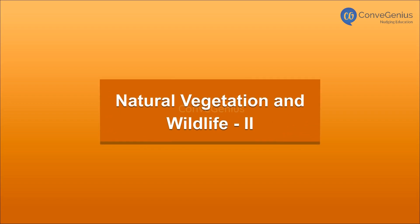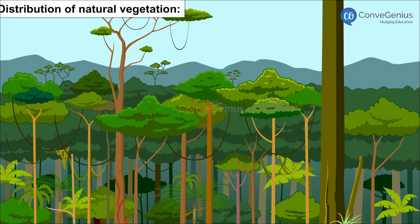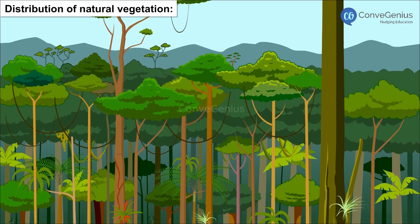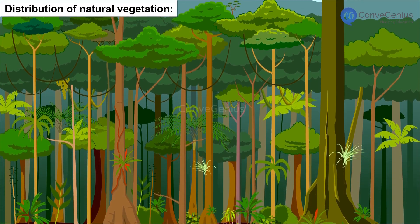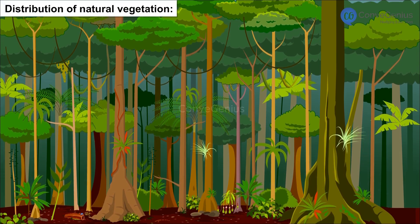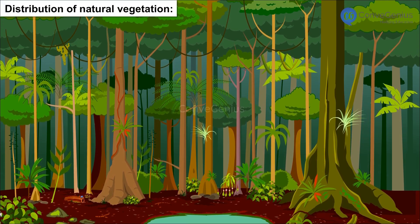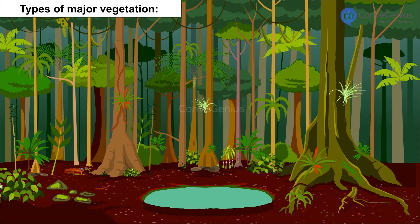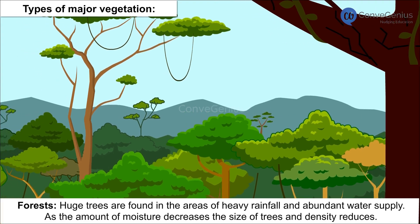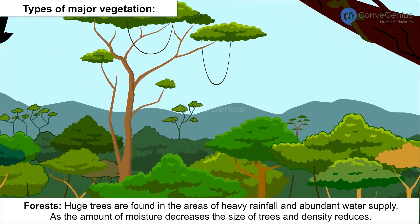Natural Vegetation and Wildlife: The growth of vegetation depends on temperature and moisture. The major types of vegetation include forests, grasslands, scrubs and tundra.